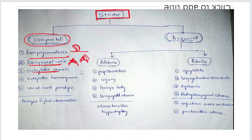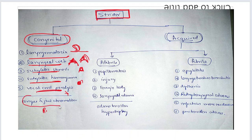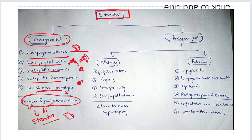Subglottic hemangioma — a growth due to benign blood vessel proliferation that is slowly growing and causing Strider. Vocal cord paralysis because of birth trauma. Tongue and jaw abnormalities are also included, though strictly speaking they come under stertor — unless the tongue falls backwards onto the supraglottis and blocks the airway causing Strider, as in micrognathia or macroglossia.